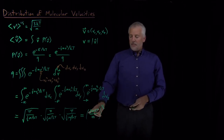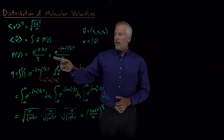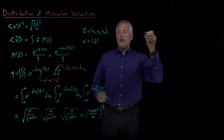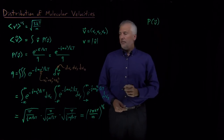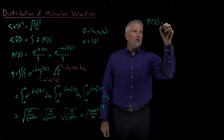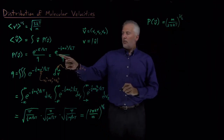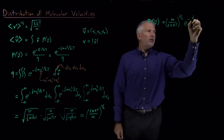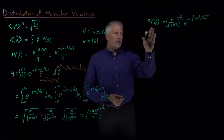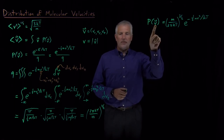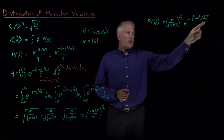This partition function — two pi kT over m raised to the three-halves power — gives us the denominator needed to calculate the distribution of velocities. Using this result, the probability that a molecule has a particular velocity is m over 2 pi kT to the three-halves, multiplied by e to the minus one-half mv squared divided by kT. So given the mass and temperature, we can plug in any velocity to find its probability.